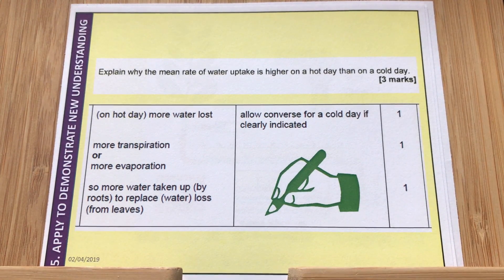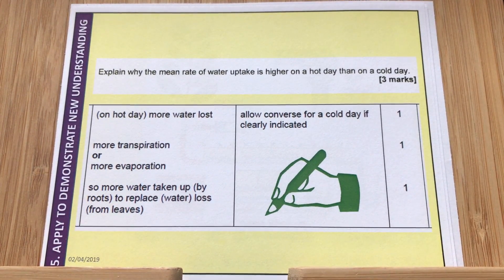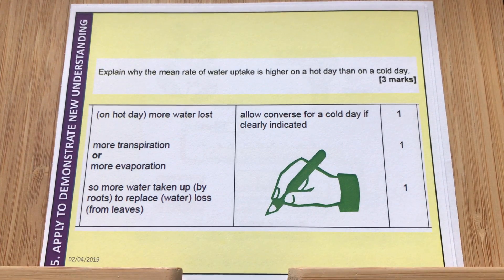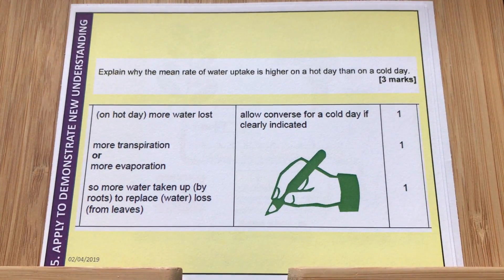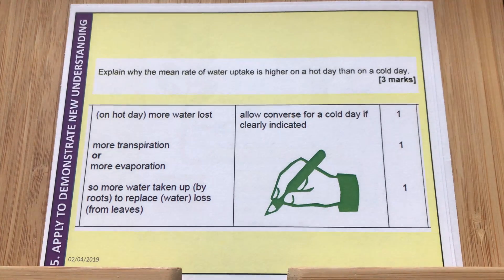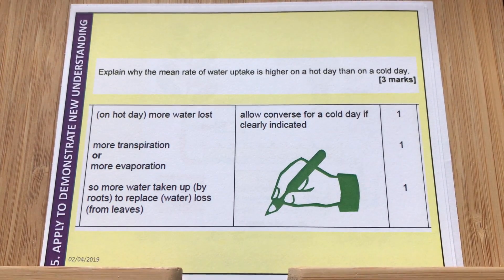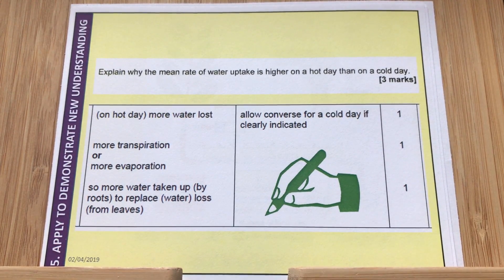More water is lost through the stomata — that's the straw idea — so because more water is lost via transpiration, more transpiration occurs on a hot day. Therefore more water is then taken up at the roots via osmosis to replace the water that's been lost, because it's a continuous stream of water, like going through a straw.